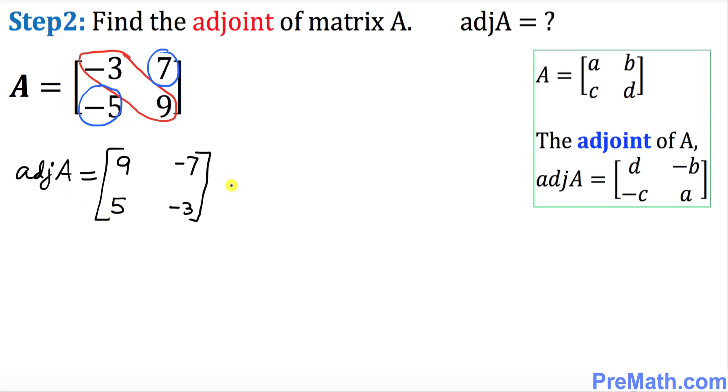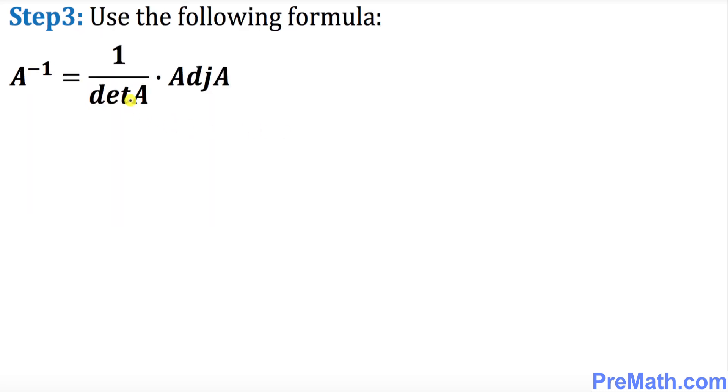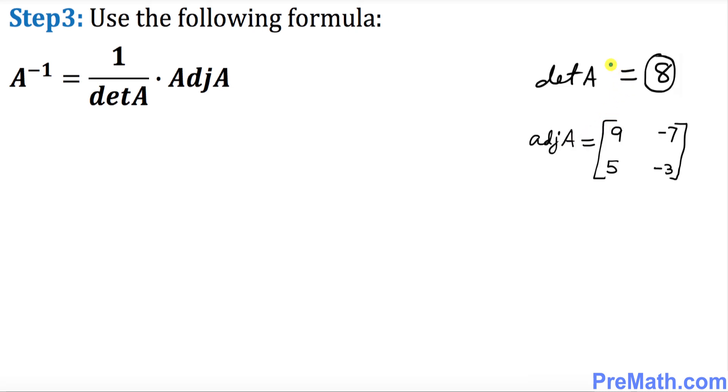And that is our adj A. In our final step, we're going to be using this formula to find the inverse matrix: one over determinant of A times adj A. In our previous steps, we figured out our determinant of A and our adj A, so let's go ahead and apply those values.